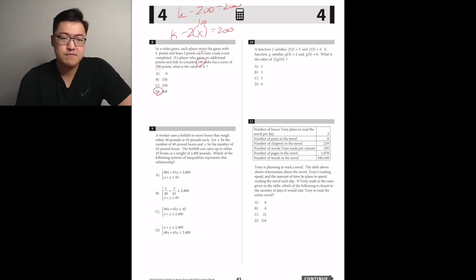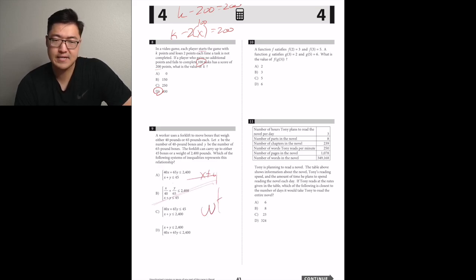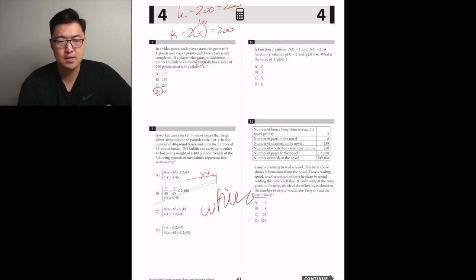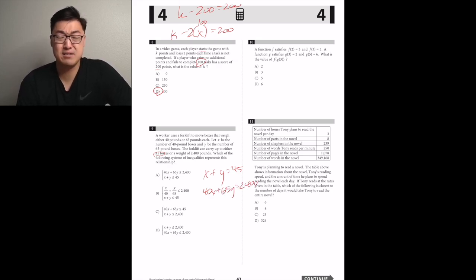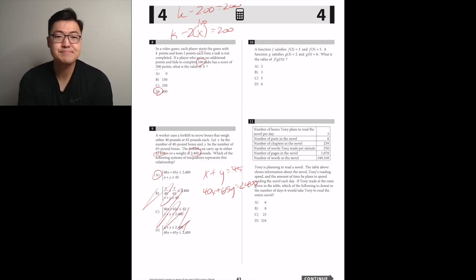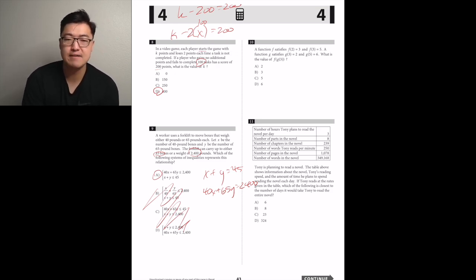A worker uses a forklift to move boxes weighing 40 or 65 pounds. Let x be the number of 40-pound boxes and y the number of 65-pound boxes. The forklift carries up to 45 boxes or 2,400 pounds. So x plus y is less than or equal to 45, and 40x plus 65y is less than or equal to 2,400.